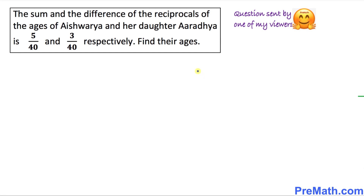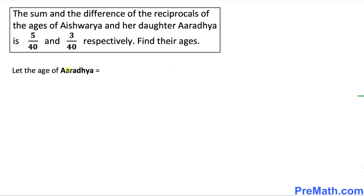Welcome to Pre-Math. In this video tutorial we look at this word problem: the sum and the difference of the reciprocal of ages of Ashria and her daughter Aradhyaya is 5/40 and 3/40 respectively. Find their ages. Let's get started with the solution.